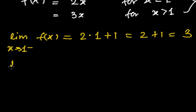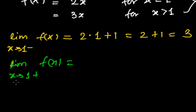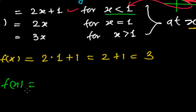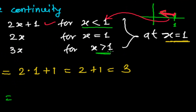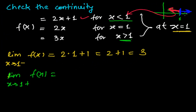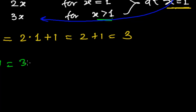Now let me find the right hand limit: limit as x tends to 1 plus of f(x). Since 1 plus means x is greater than 1, we use the piece for values greater than 1, which is 3x. So 3 times 1 equals 3. So again we get the right hand limit equal to 3 — same as the left hand limit.